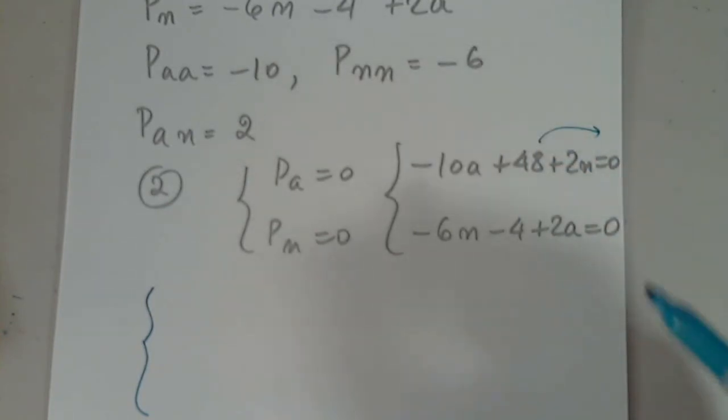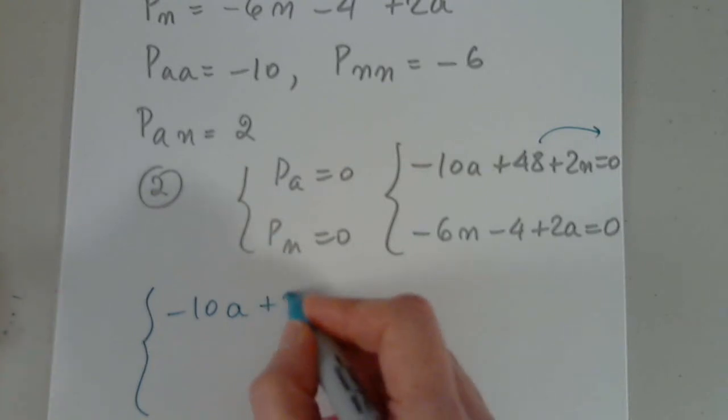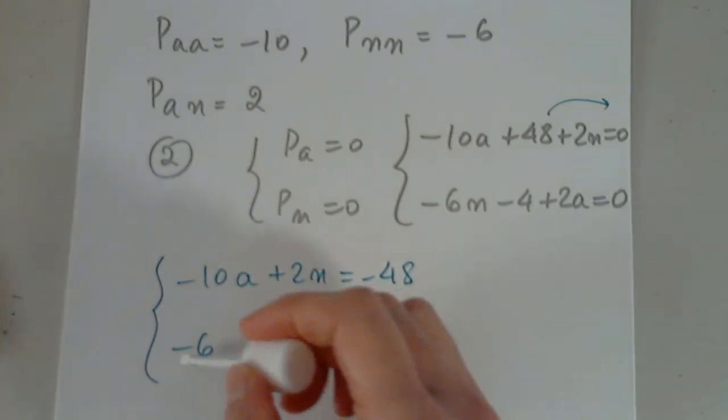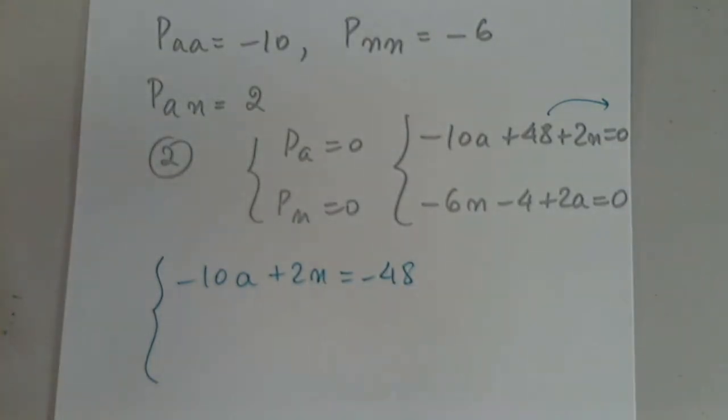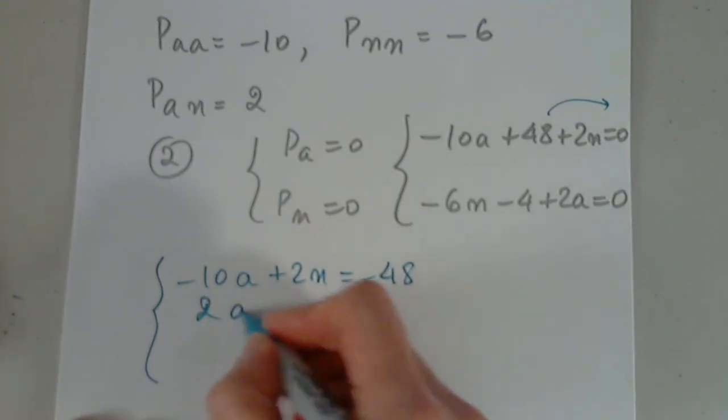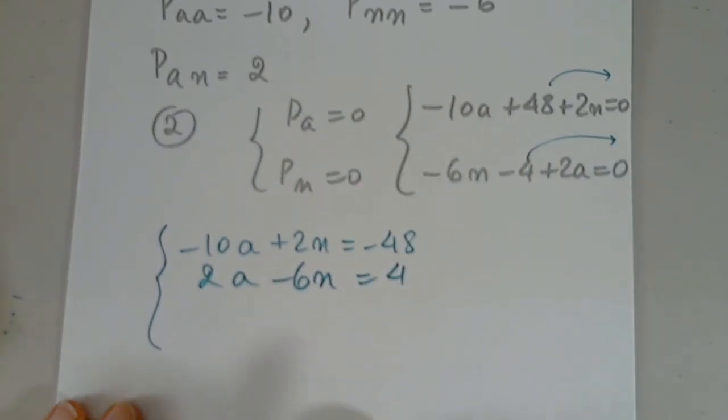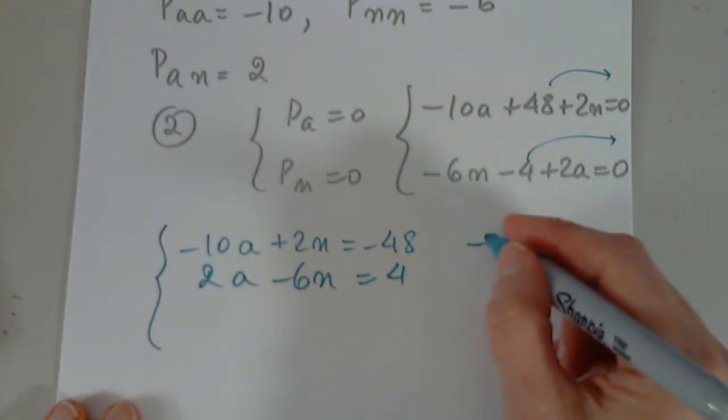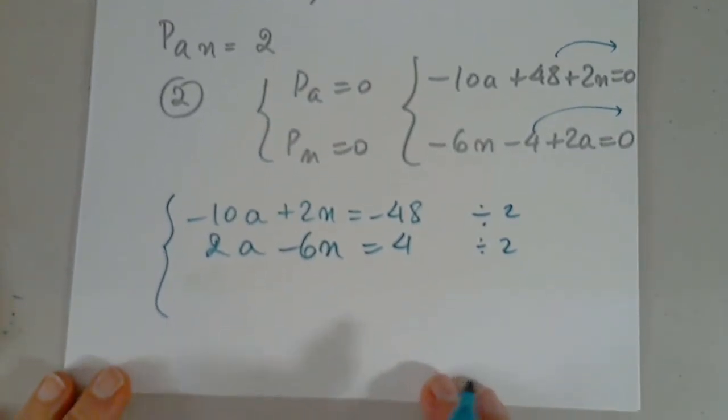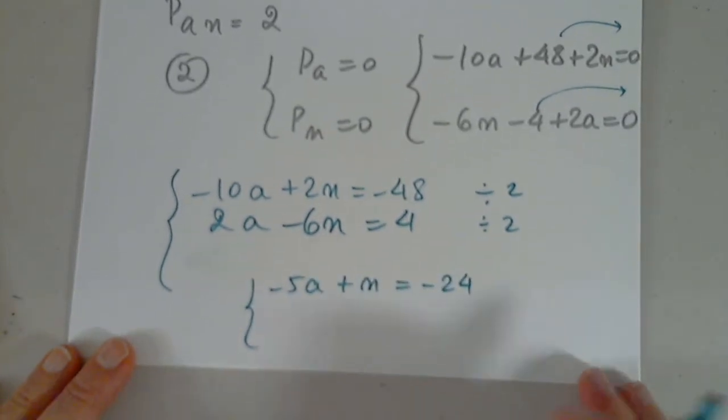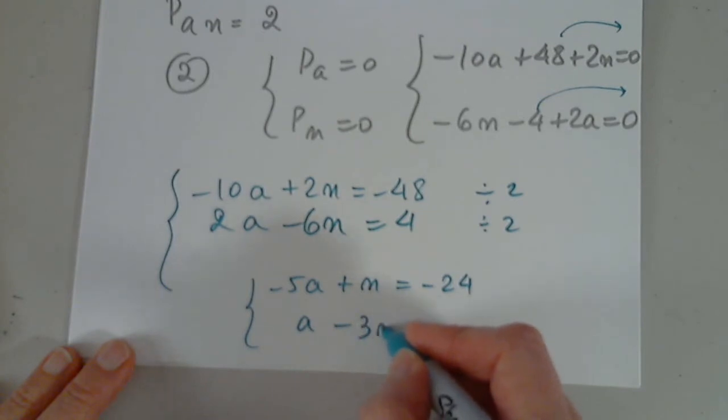Okay. Of course I will move 48 to the other side. So I have negative 10a. Plus 2n equals negative 48. And I need to put it in the same exact order. One under the other. So I want to put plus 2a. Because I started with a in the first one. So this is 2a. And then minus 6n. And I move 4 to the other side. Which is 4. Okay. I will divide both by 2. So the system becomes negative 5a plus n equals negative 24. And a minus 3n equals 2.